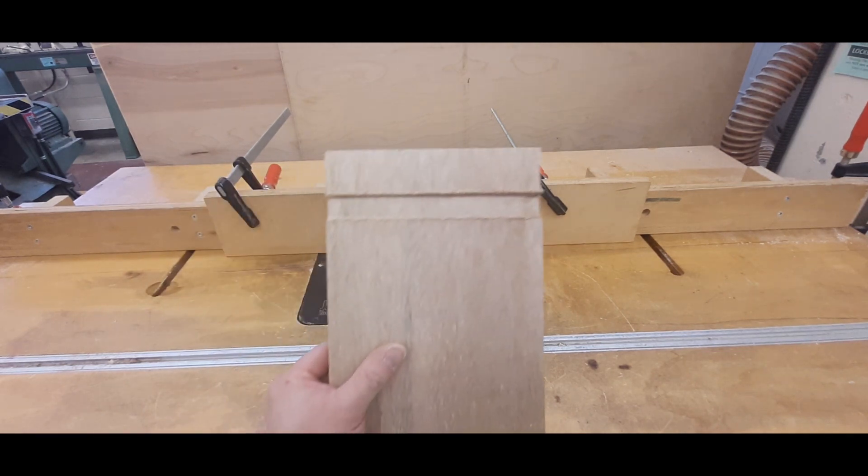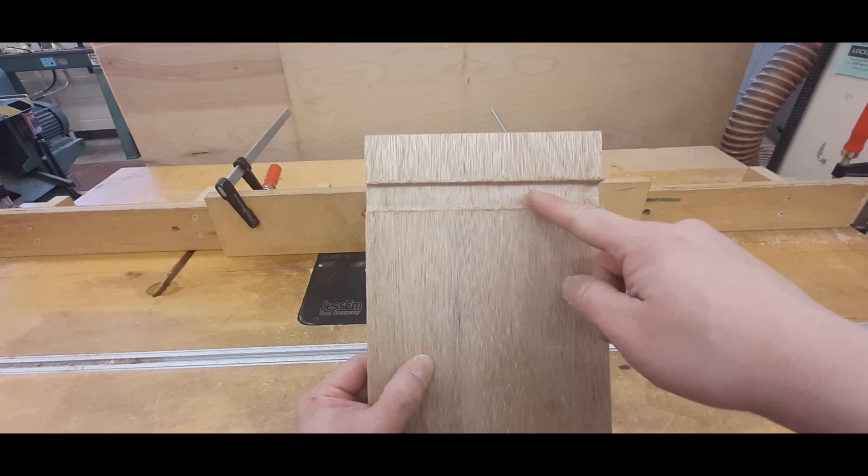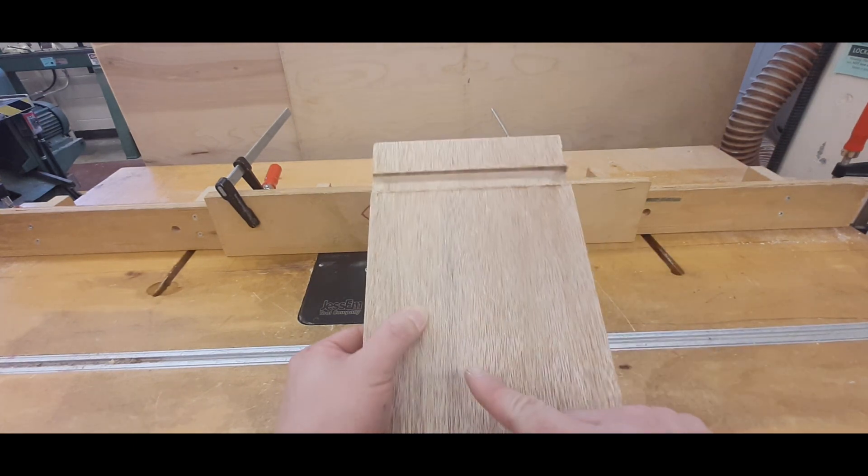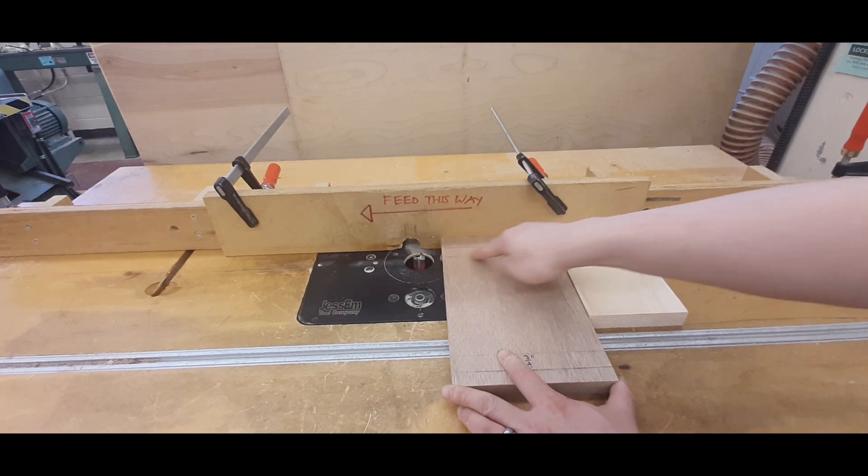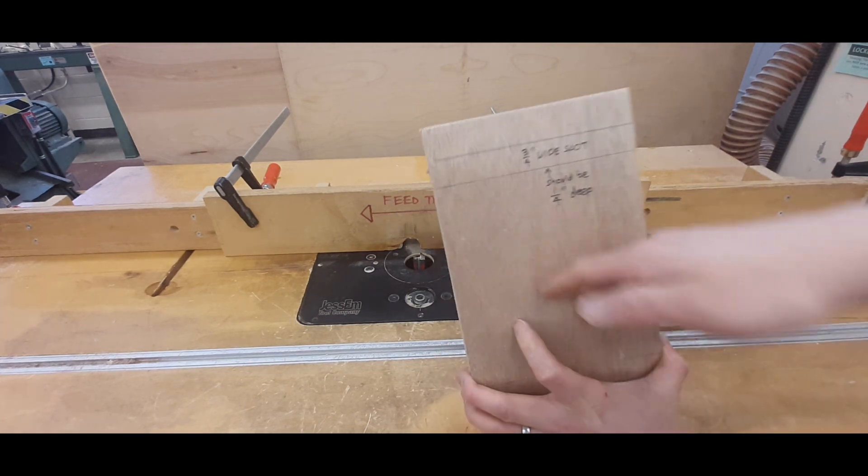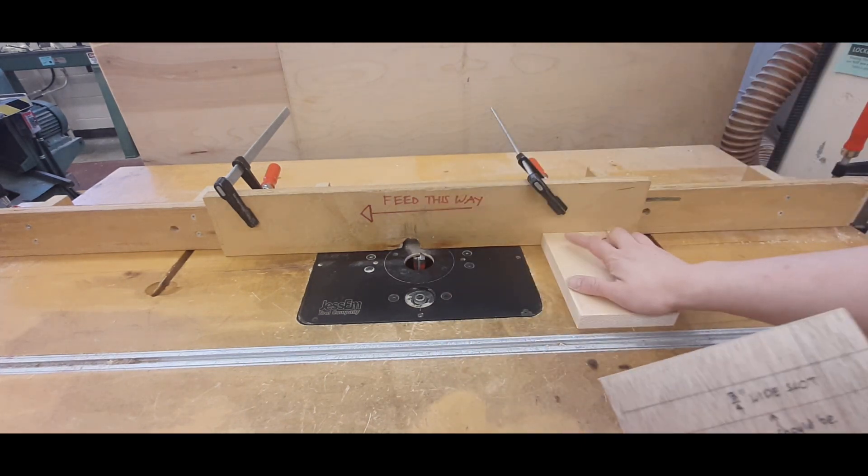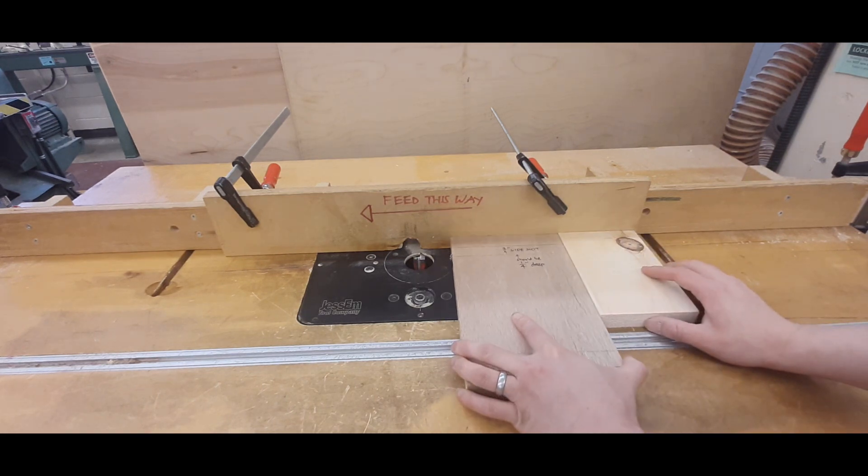It's important to remember that when you're cutting a dado, and in case you forgot, a dado is a slot that cuts across the lines or the grain of the wood. It's important to remember that anytime you cut against the grains or the lines of the wood, you want to have a backing board directly behind it to support your cutting.